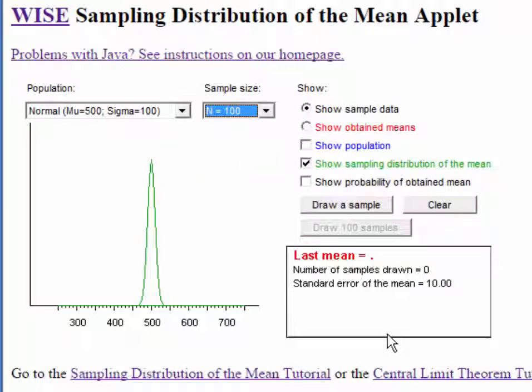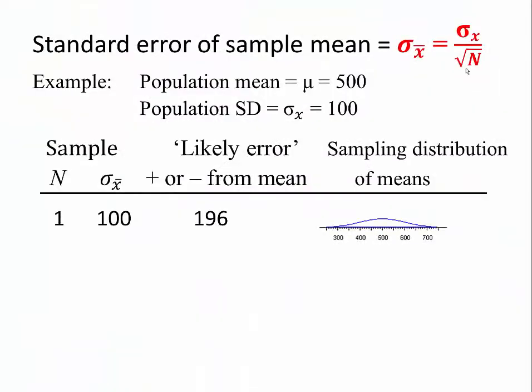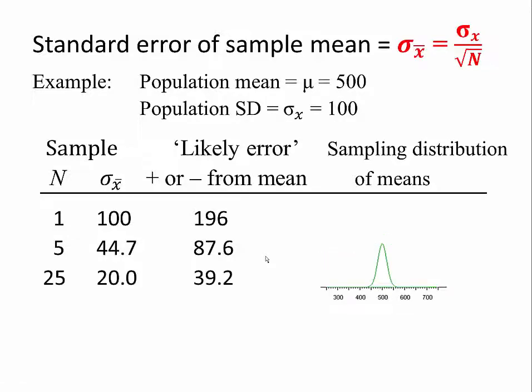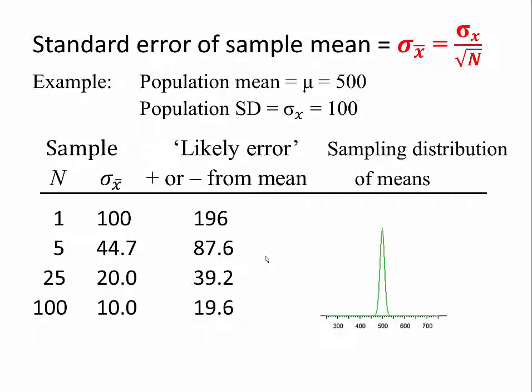So what have we learned from this? We began with an n of 1, and when n is 1, the standard deviation of individual scores is 100. The likely error, plus or minus from the mean, is 196. Sample of 5 gives us the standard error of 44.7, which is a likely error of 87.6. That is 1.96 times the 44.7. When n is 25, the likely error is 39.2, and when n is 100, the likely error is only 19.6.